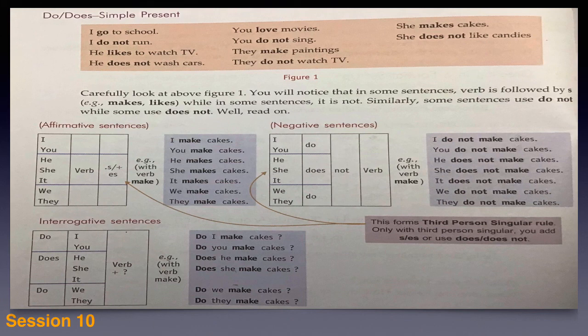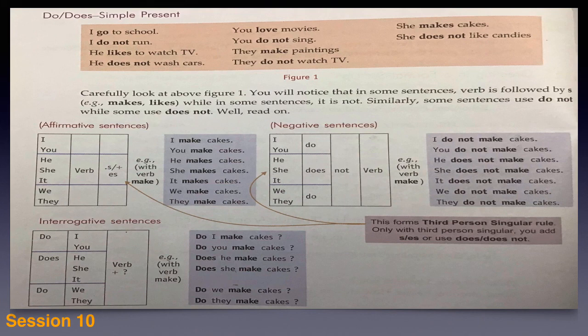He does not wash cars. Carefully look at figure one. If you notice, in some sentences the verb is followed by S — like in 'makes' and 'likes' — while in some sentences it is not. Similarly, some sentences use 'do not' while some use 'does not'.